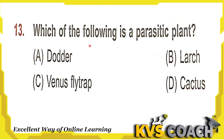Next question: which of the following is a parasitic plant? Parasites are organisms that attach themselves to other plants to get water, minerals, and carbohydrates. Dodder — yes, it is a parasitic plant. Large Venus flytrap and cactus are not parasitic plants.